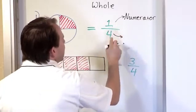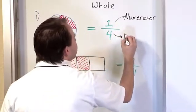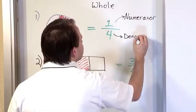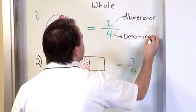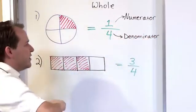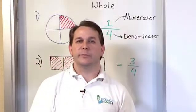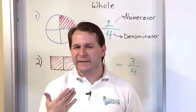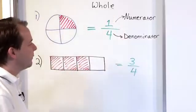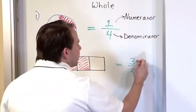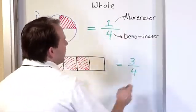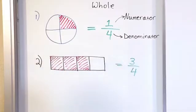And the bottom number is always called the denominator. Right? You can kind of think of denominator, denominator being on the bottom, denominator on the bottom. So you can kind of get that. And the numerator is the top number. So over in this fraction, the three is called the numerator and the four is called the denominator. And so that's just a term.